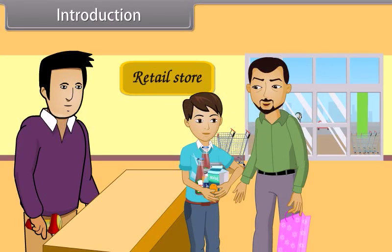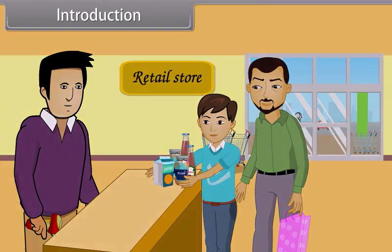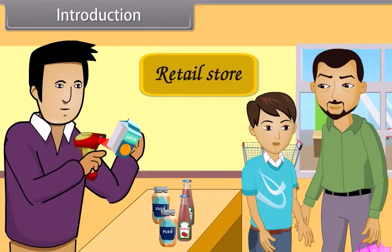Son, put all the items on the counter table for billing. Yes, father. Father, I want to ask you something. Yes, son, you can ask. Father, the shopkeeper is using some light device to access the details of all the goods. What is it and how does it work?